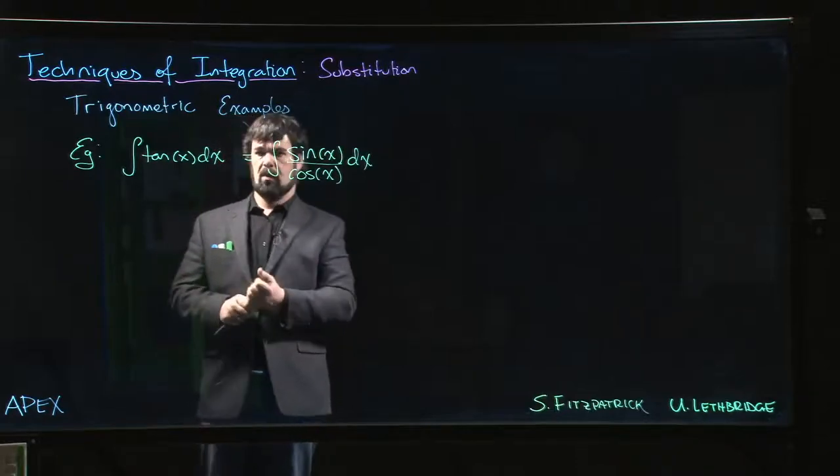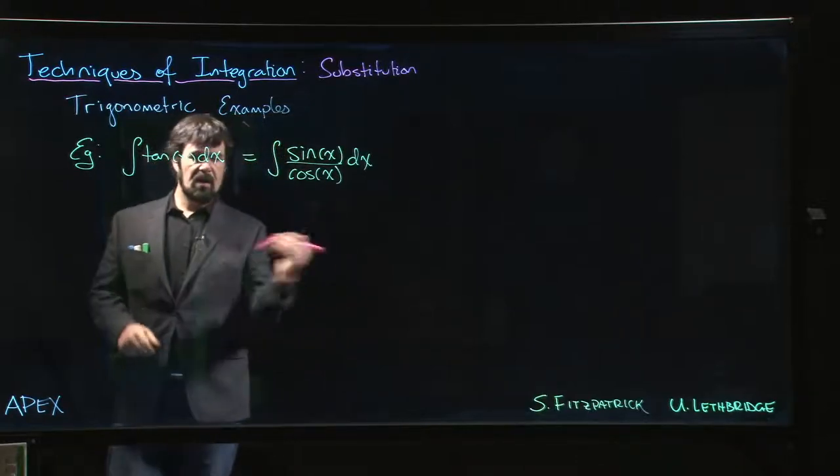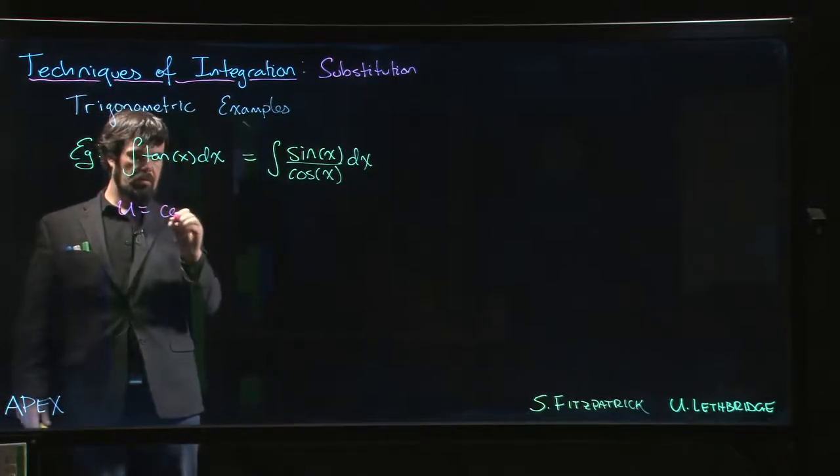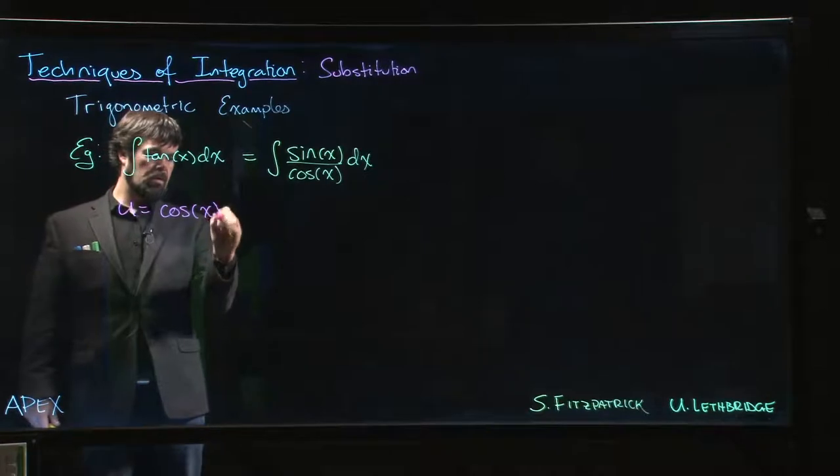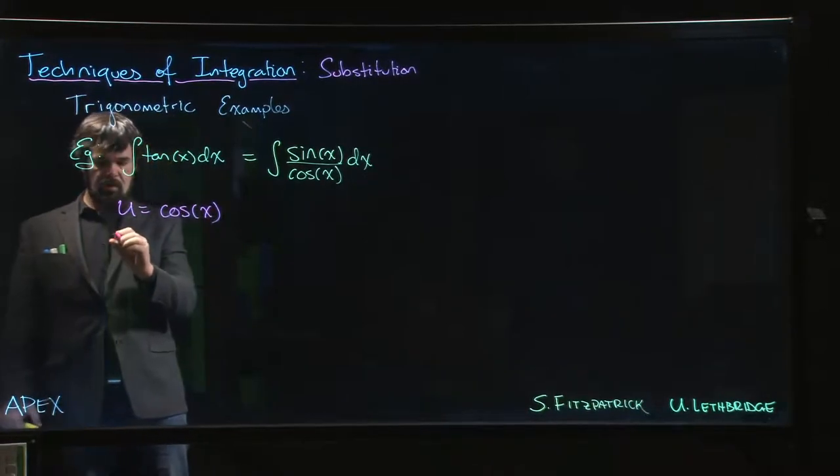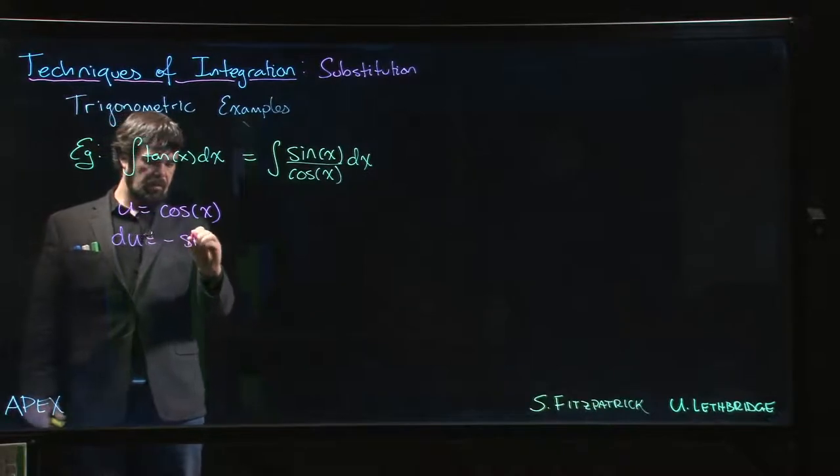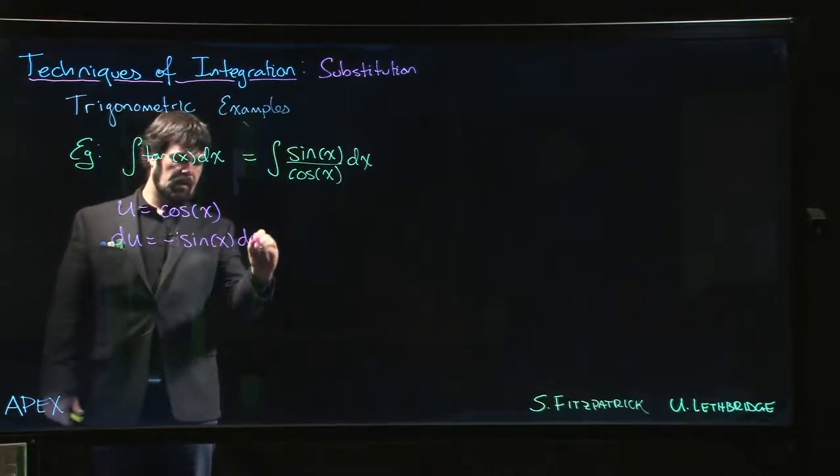So the suggestion here is that what we should take is we should let u equal to cosine x. So if we do u is cosine x, then du will be negative sine x dx.